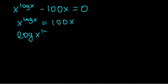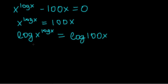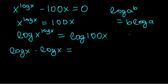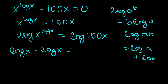The log of x to the power log x is equal to the log of 100x. For any such power of a log, we can write this as b times log a, so we get log x times log x. And we know that log of a product ab can be written as log a plus log b, so the right side becomes log 100 plus log x.